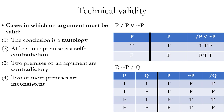A second way an argument must be valid is if it has one premise that's a self-contradiction. That's never going to satisfy the definition of invalidity because you're never going to have a row where all the premises are true. Similarly, a third way is if the two premises are contradictories of each other — in order to be invalid, the argument must have at least one row where all premises are true and the conclusion is false, but contradictory premises can never both be true.